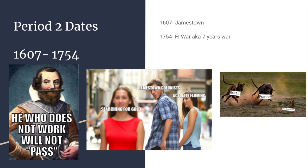Period two starts with the first permanent settlement in Jamestown in 1607. John Smith was a leader who tried to force people into work — one issue was that many colonists focused on cash crops and quick money. Period two ends in 1754 with the French and Indian War. During this period, whether England would have strong control over North America was still uncertain, with Spanish, French, and Dutch influence present, but by 1754 Great Britain would be established as the leading European influence in what is now the United States.